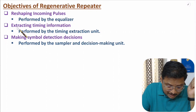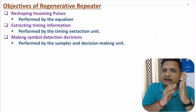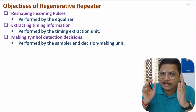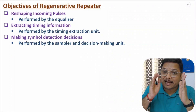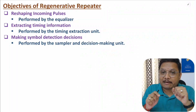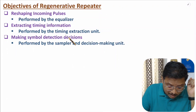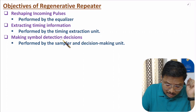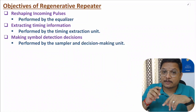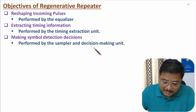The second objective is extracting timing information. Here we are transmitting a digital signal, so there will be zeros and ones that we will be transmitting serially. It is very essential to understand at what instant there is a zero or one, and to determine that we need to extract timing information — which we perform with the use of a timing extraction unit. The third objective is to make a decision for a given pulse, whether there is a zero or one, and that decision is taken with the use of a sampler and decision-making unit.